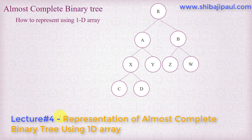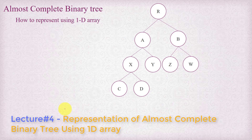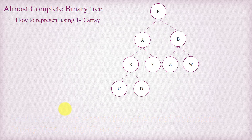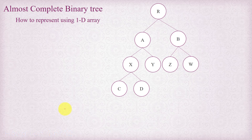In this tutorial I'm going to show you how to represent an almost complete binary tree using a one dimensional array. If you need to represent an almost complete binary tree then you just don't need to build a binary tree in the traditional way. You just need one dimensional array to represent this whole almost complete binary tree. Let me show you the trick.